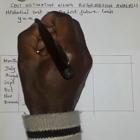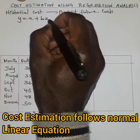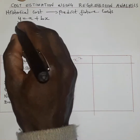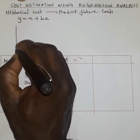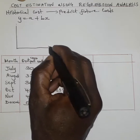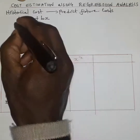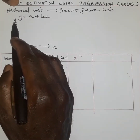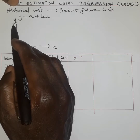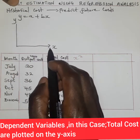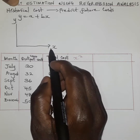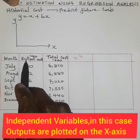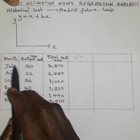Under cost estimation it follows the normal linear equation whereby we have y = a + bx. On a graph on the Cartesian plane, we have the x-axis and the y-axis. Values recorded on the y-axis are always dependent variables, which depend on the variables on the x-axis, referred to as independent variables. In this case, we've been given the output units for every month.